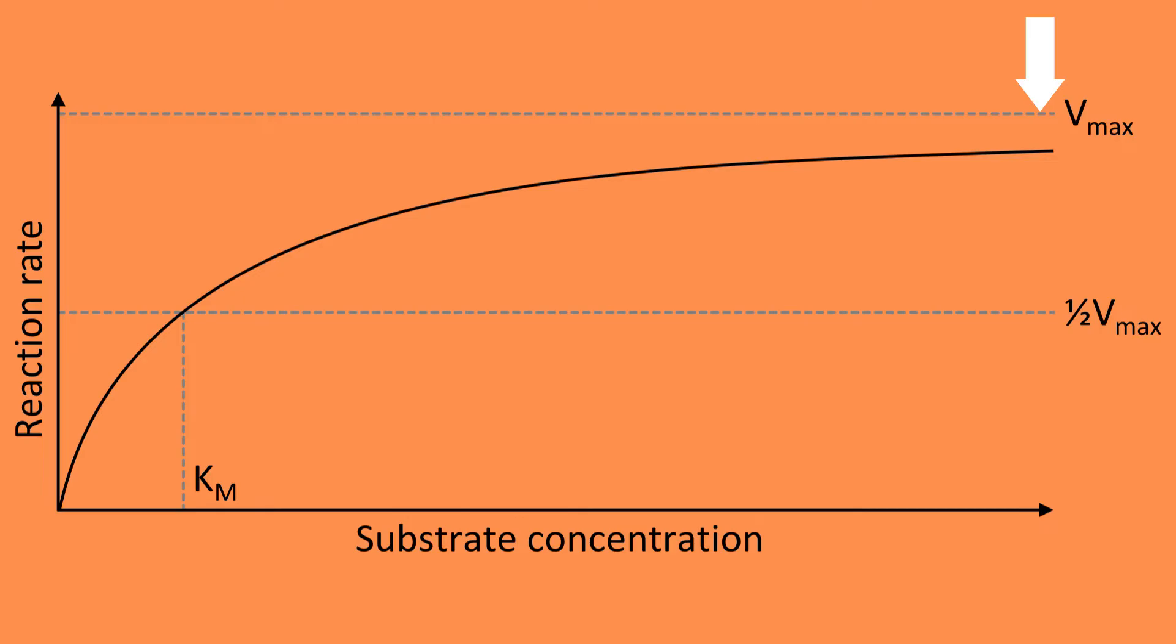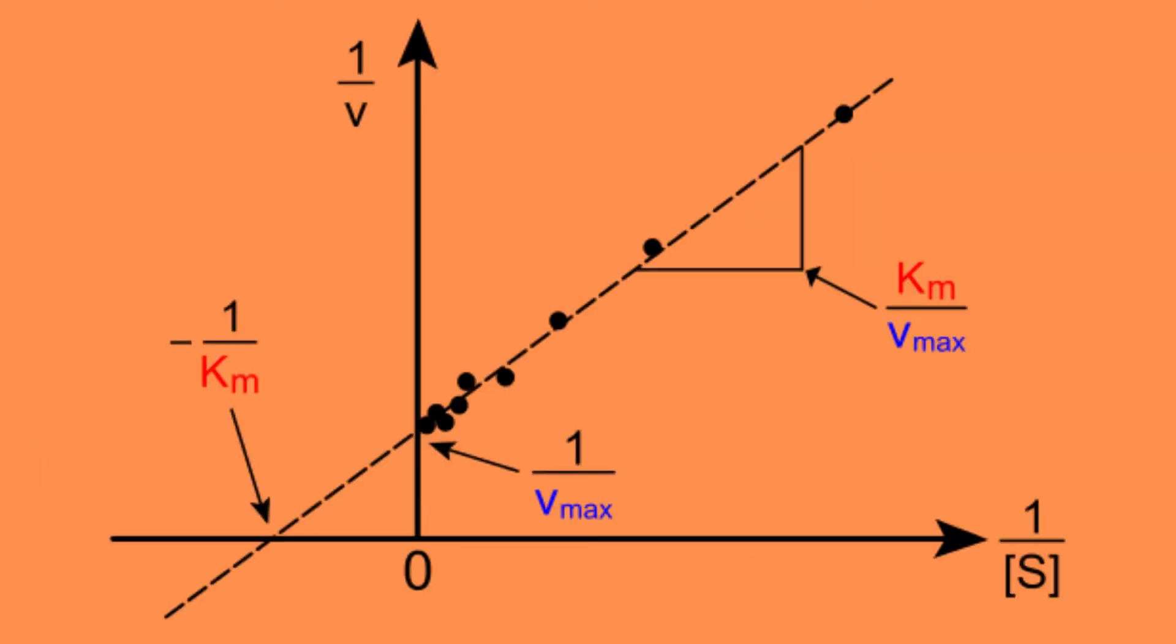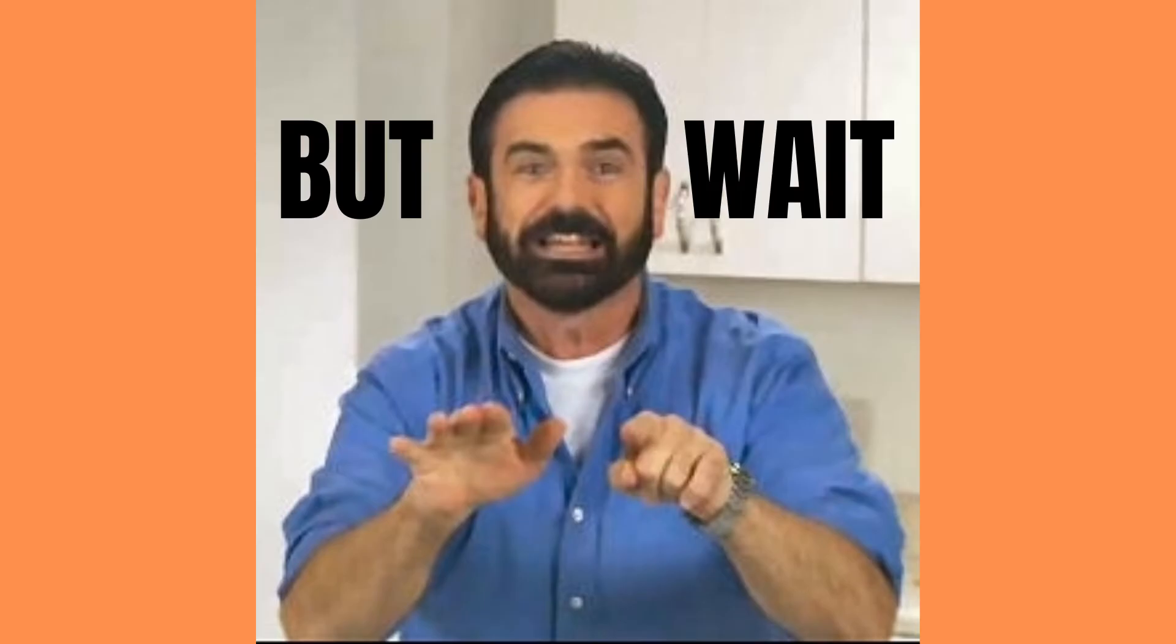Therefore we get an error in both the Vmax as well as the Km value. To solve this we can use a Lineweaver-Burk plot, but do not worry about this plot quite yet.